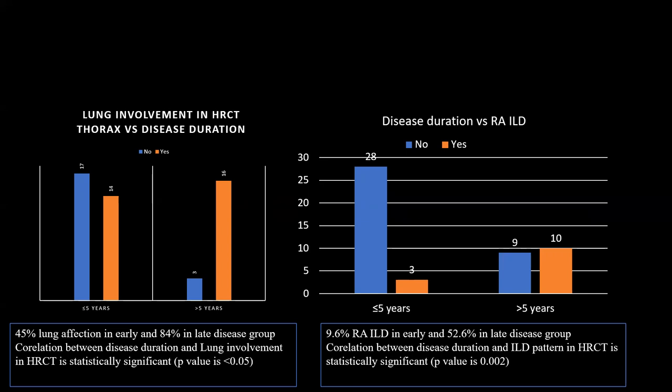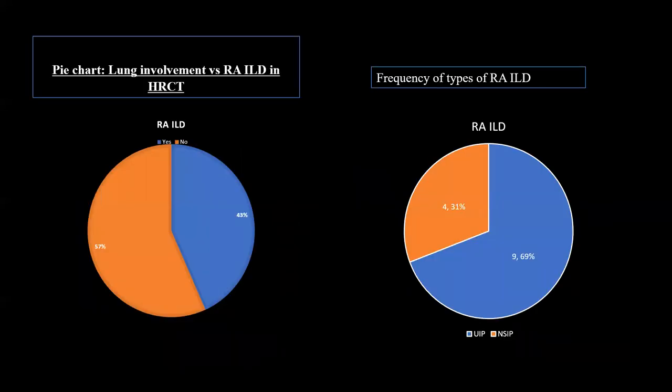We found that 39.6% of patients had rheumatoid arthritis-associated ILD in the early disease group and 52.6% in the late disease group. The correlation between disease duration and ILD pattern on HRCT is statistically significant. Among patients with lung involvement, 43% had ILD and the UIP pattern was most common.